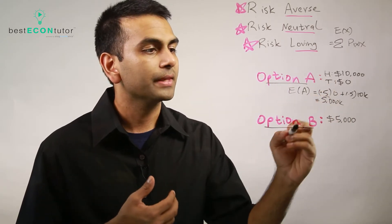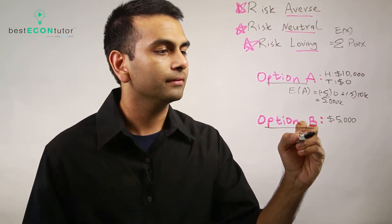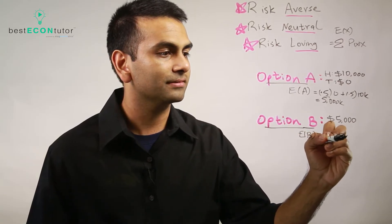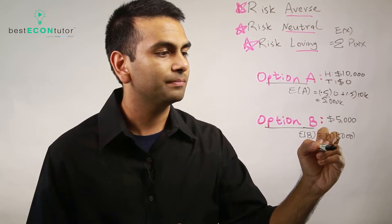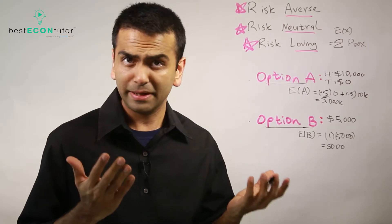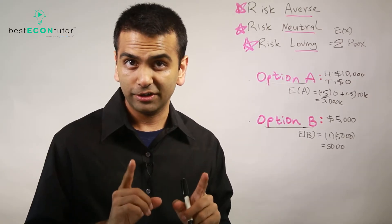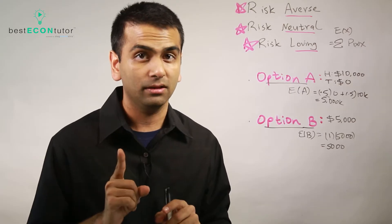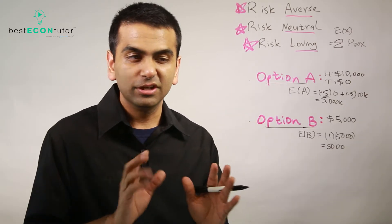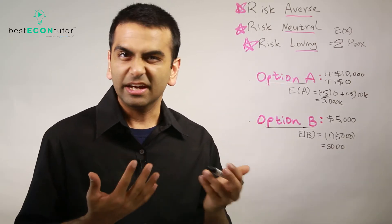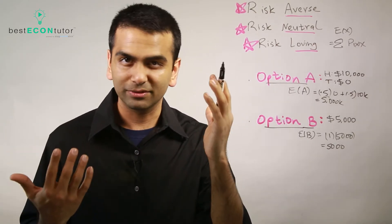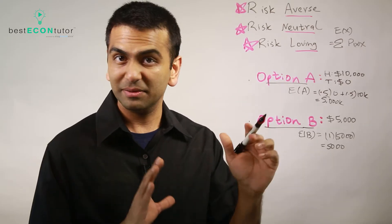So to find the expected value, you take each probability times the outcome and sum them. Here, the expected value of option A is 0.5 times $0 plus 0.5 times $10,000, which equals $5,000. On average, you can expect to get five grand. That works here because heads and tails are equally likely, but it won't always be that simple if probabilities differ.